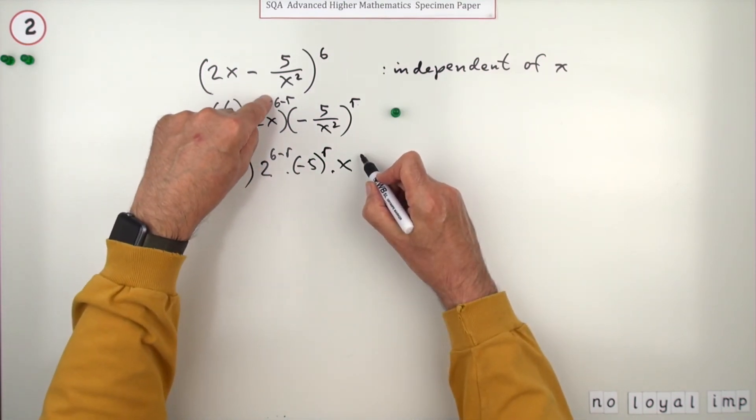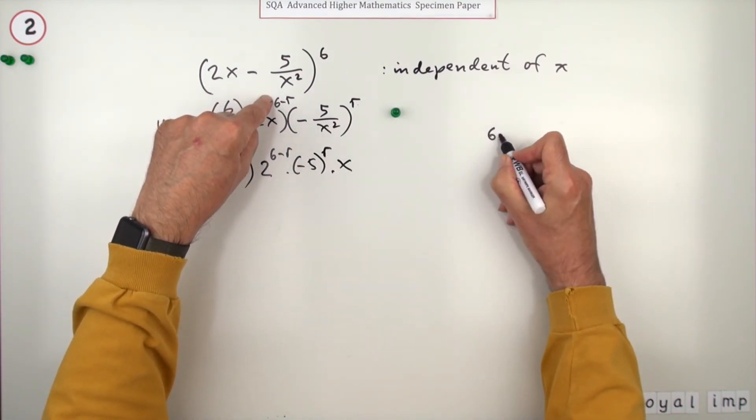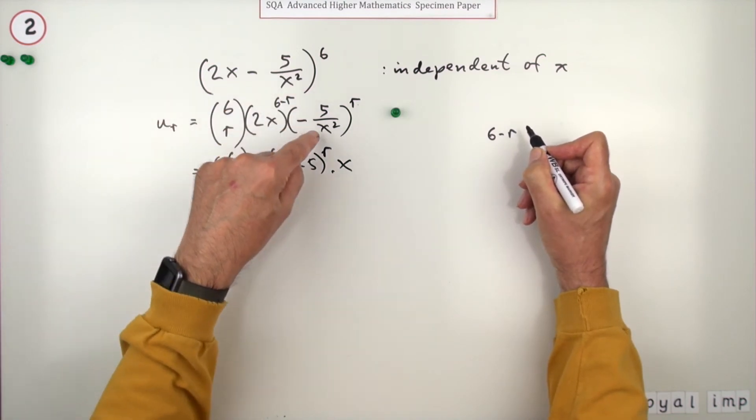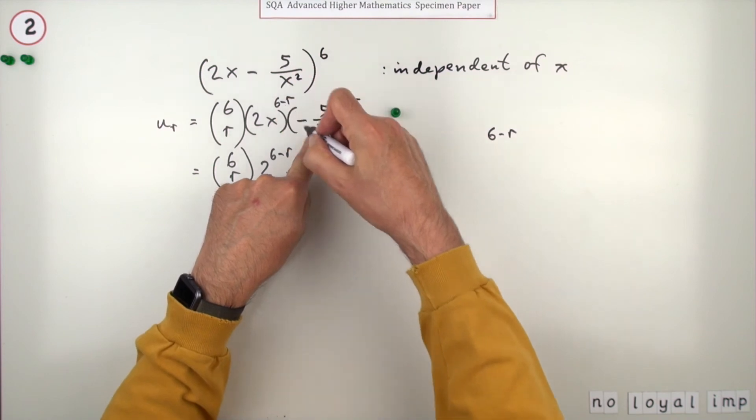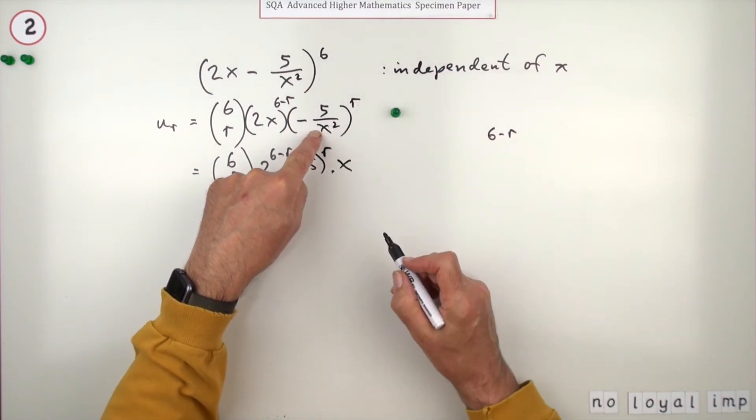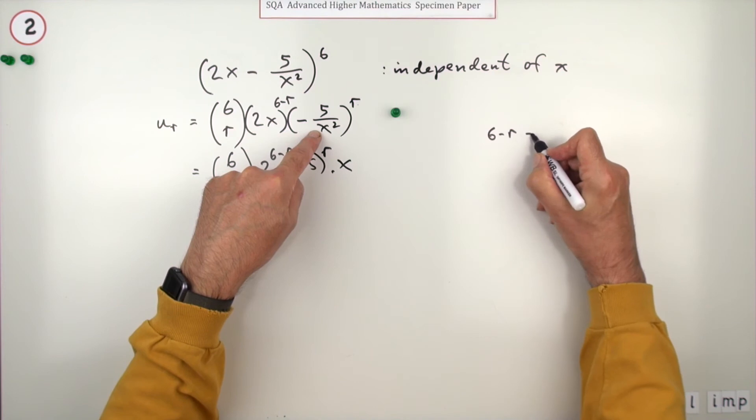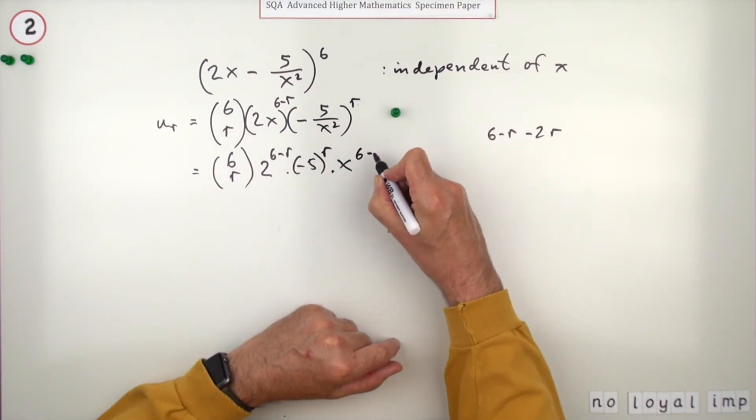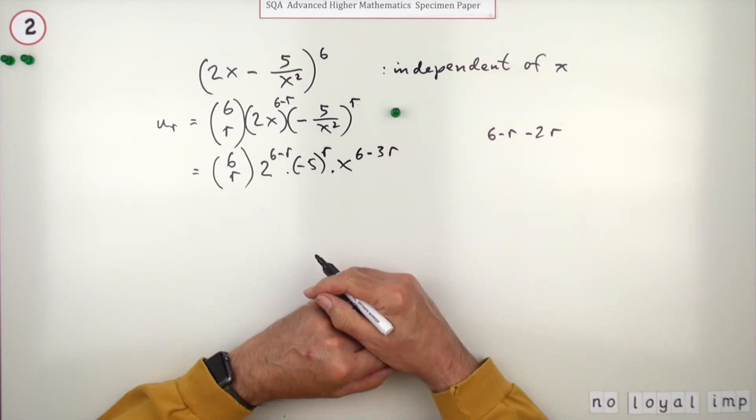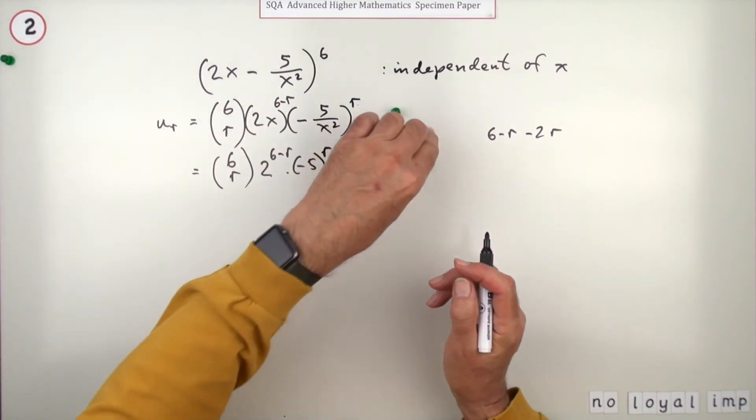Well, this one—maybe I'll do this bit to the side—is 6 minus r. But this one, since it's underneath, will be subtracted from it. If you're dividing them, you subtract the powers, and it's a square, so it's minus 2r. So that means it's 6 minus 3r altogether. Doing that gets the second mark.